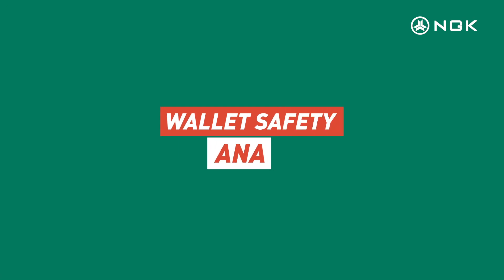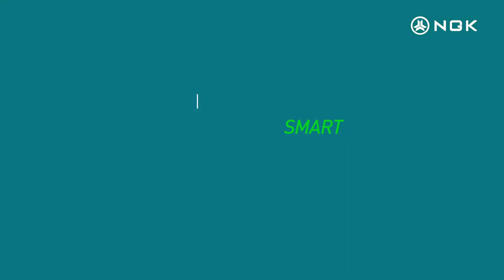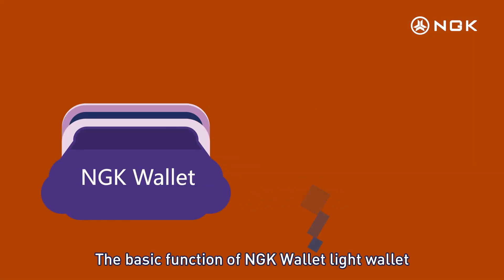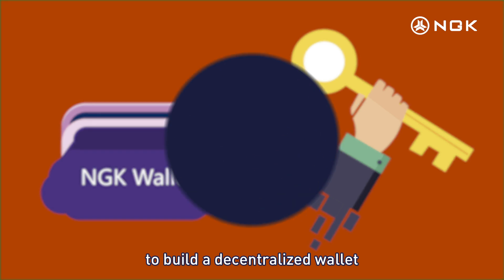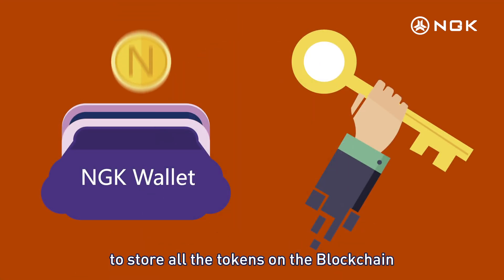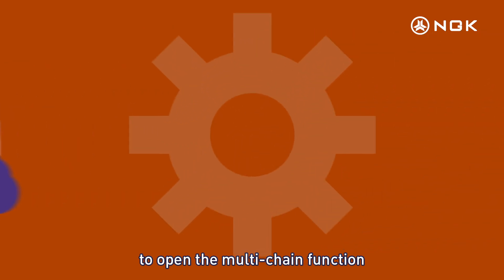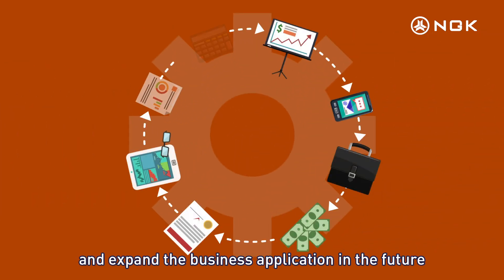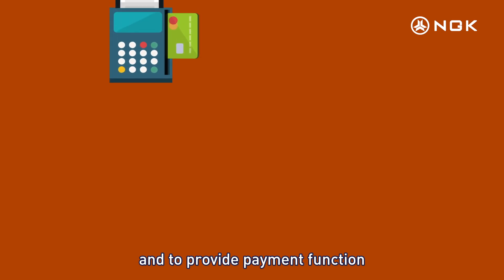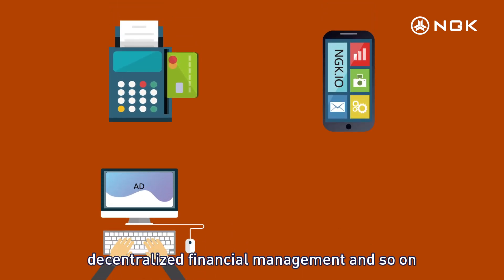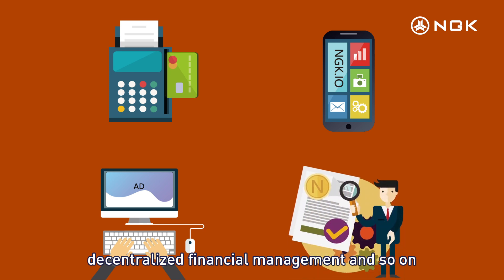Wallet Safety Analysis. Smart Lite Wallet: The basic functions of the NGK Lite Wallet are to manage the private key, build a decentralized wallet based on the NGK blockchain, store all tokens on the blockchain, open multi-chain functionality, expand business applications in the future, and provide payment functions, application docking, advertising services, decentralized financial management, and more.